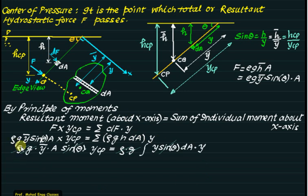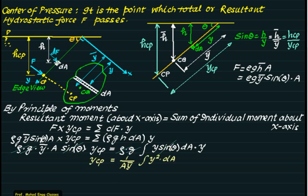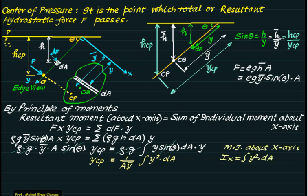Applying the moment equation: F × y_cp = integral of dF × y. Substituting F = rho × g × y-bar × sin(theta) × A and dF = rho × g × h × dA = rho × g × y × sin(theta) × dA, then rho, g, and sin(theta) cancel from both sides. This gives y_cp = (1 / (A × y-bar)) × integral of y² dA. The moment of inertia about the x-axis is Ix = integral of y² dA.